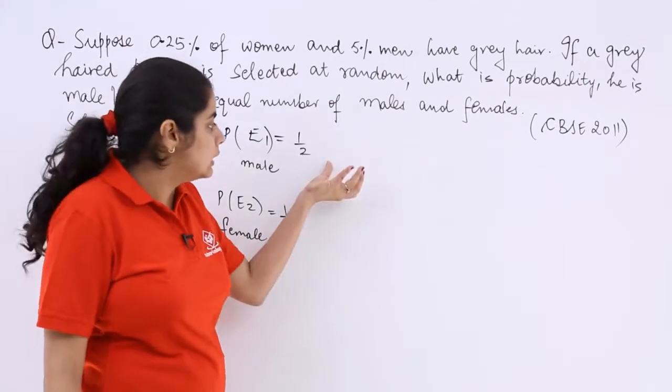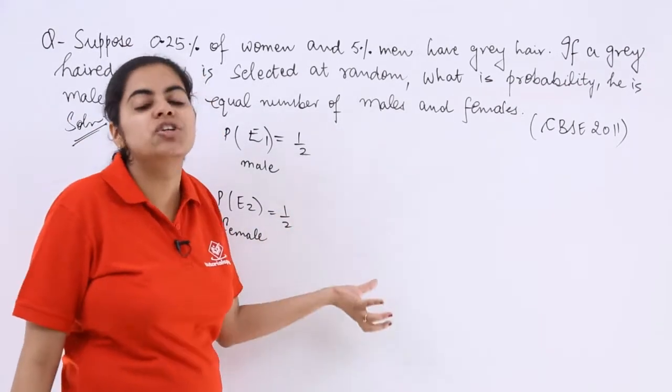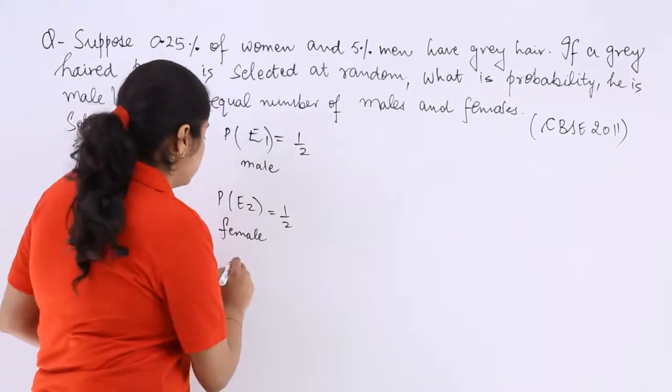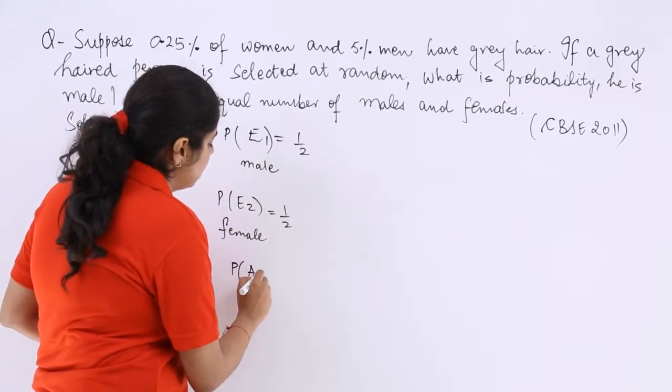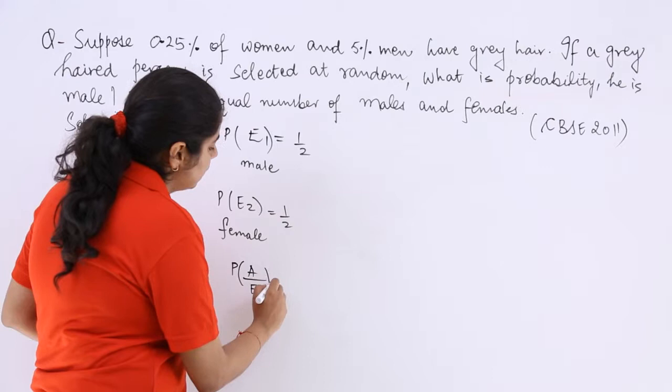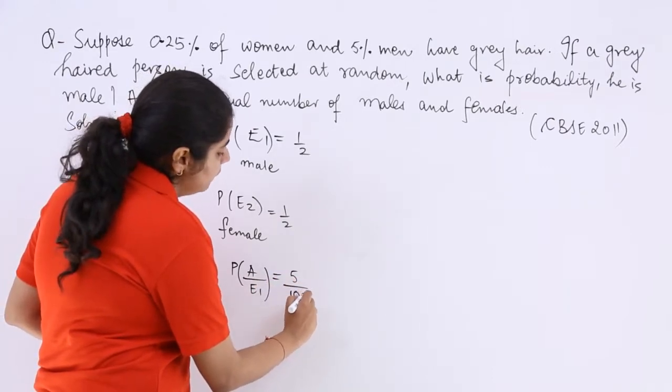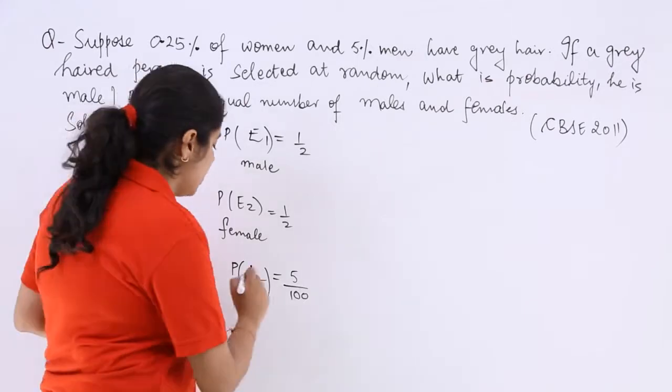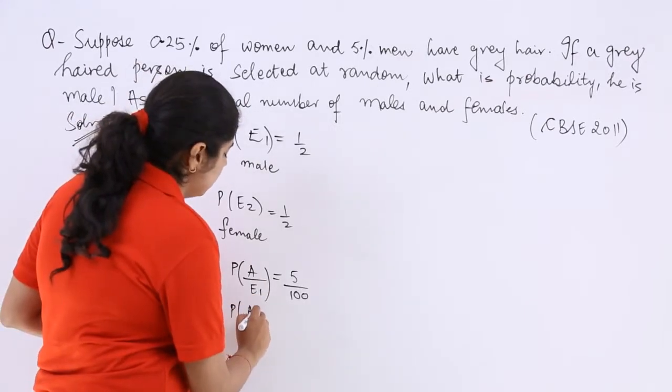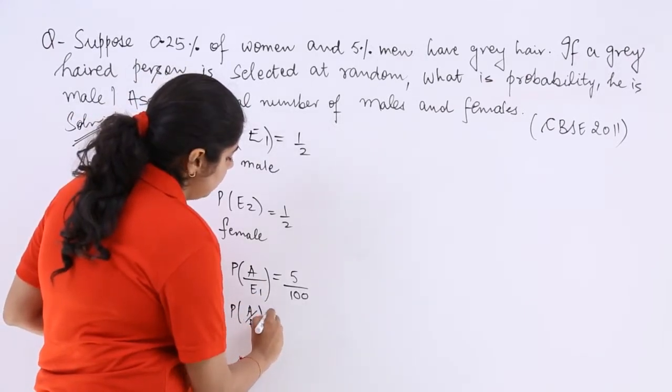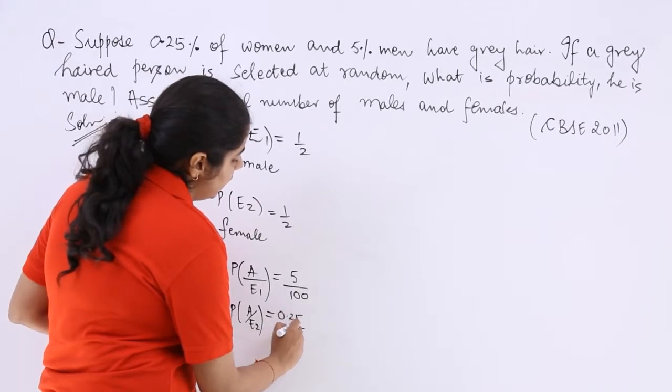Now this information does not finish the question itself. We also know probability of having grey hair when we are talking about male is 5 over 100. Similarly, probability of having grey hair when we are talking about female is 0.25 over 100.